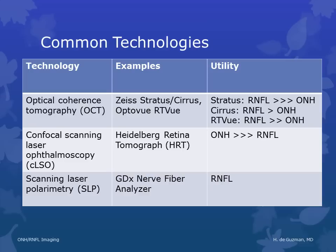There are three commonly used imaging technologies: optical coherence tomography, confocal scanning laser ophthalmoscopy, and scanning laser polarimetry. OCT is most useful for evaluation of the retinal nerve fiber layer, and to some extent also useful for evaluation of the optic nerve head. Confocal scanning laser ophthalmoscopy, such as the HRT, is much more useful for evaluating the optic nerve head. Scanning laser polarimetry is entirely for evaluating the retinal nerve fiber layer.